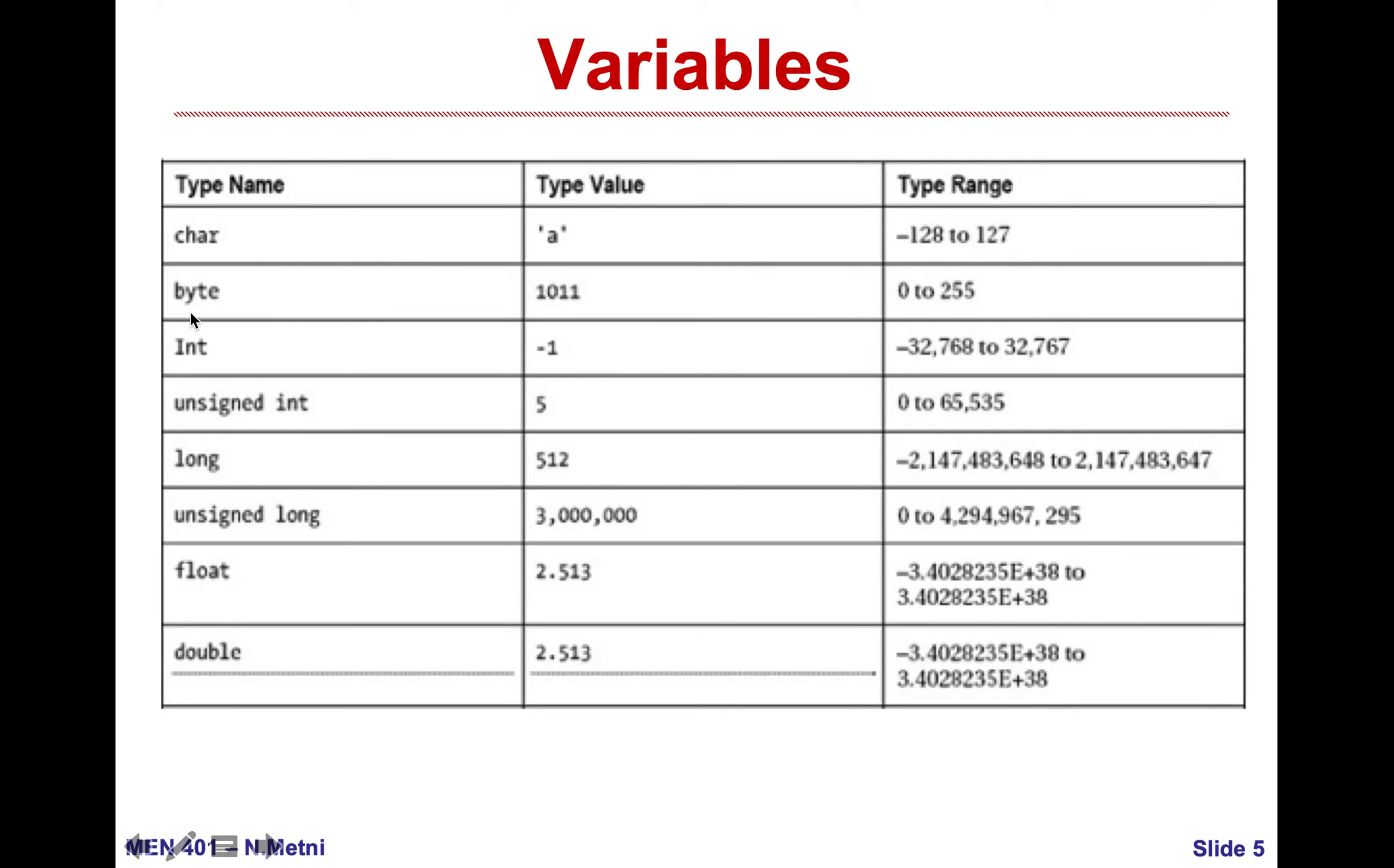The byte is 8-bit with values from 0 to 255. Integer will take 2 bytes, 16 bits in memory, from 0 to 2 to the power 16. The integer is from minus 2 to the power 15 to 2 to the power 15, so from minus 32,000 to 32,000.